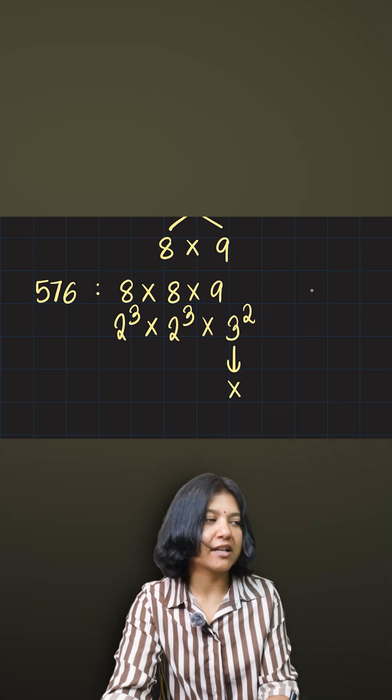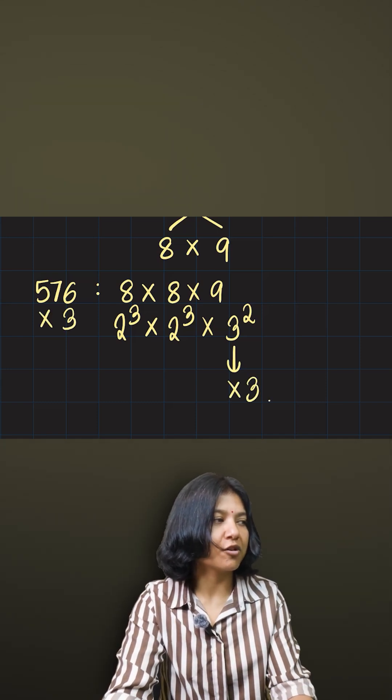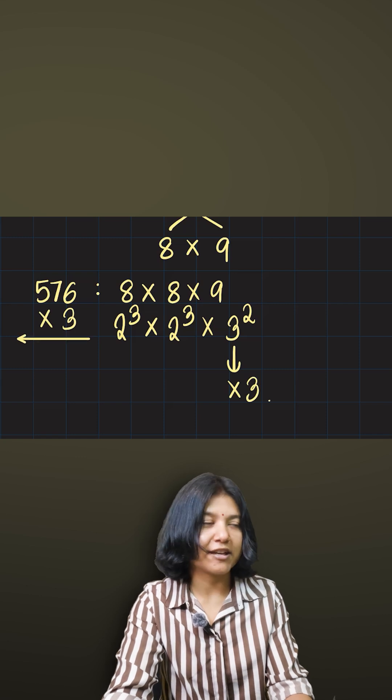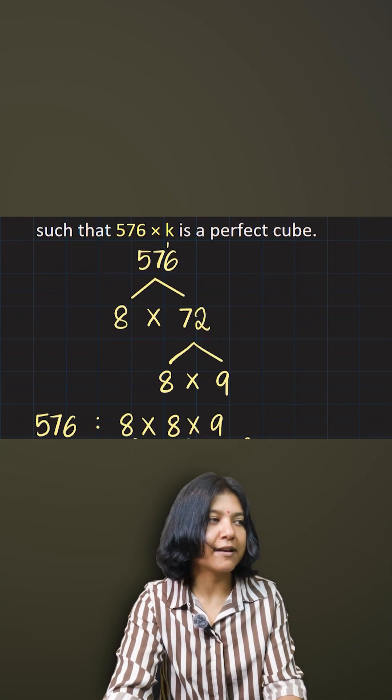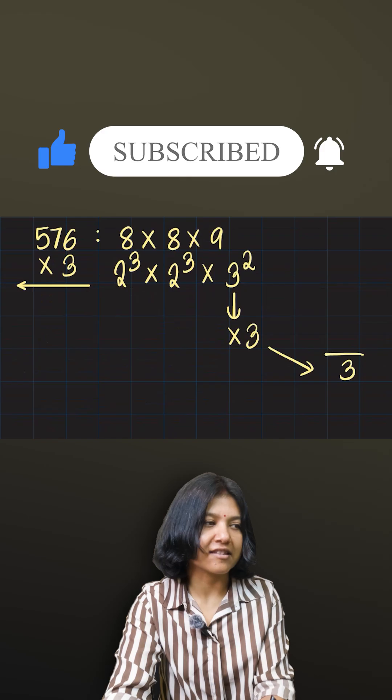Hence, if you multiply by 3, you'll get a perfect cube number. Therefore, the question asks you to find the value to multiply. The only number to multiply here is 3, and that is the answer.